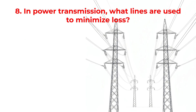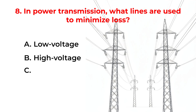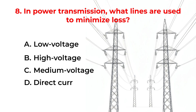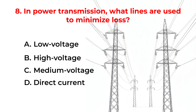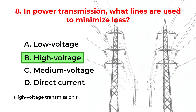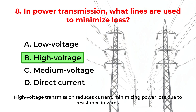In power transmission, what lines are used to minimize loss? A. Low voltage. B. High voltage. C. Medium voltage. D. Direct current. The correct answer is Option B: High voltage. High voltage transmission reduces current, minimizing power loss due to resistance in wires.